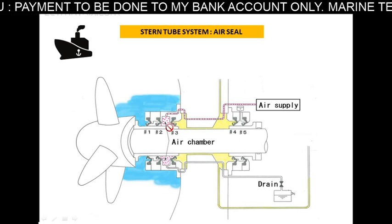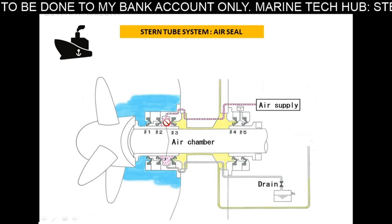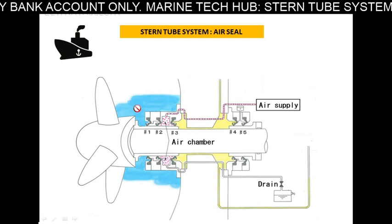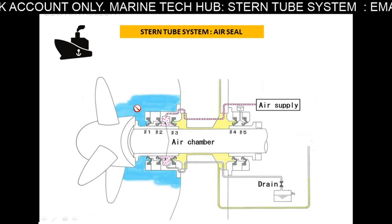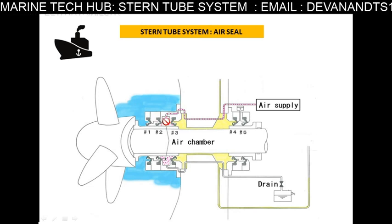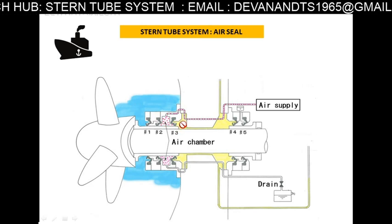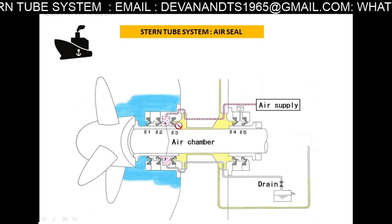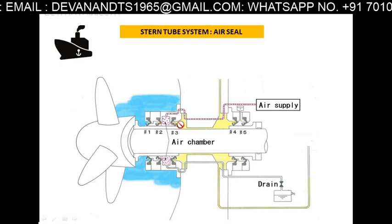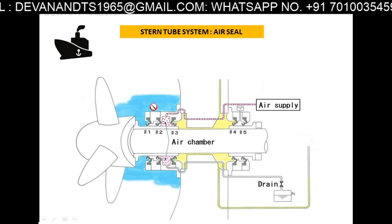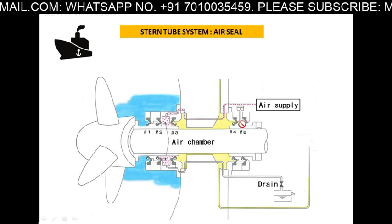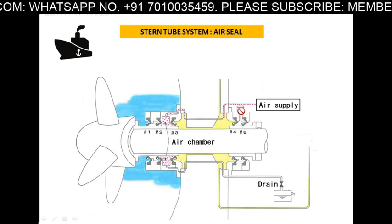To prevent sea water and oil from mixing, we apply air pressure in the chamber. If sea water pressure is 1 bar, the air pressure should be a little bit more, and the oil pressure should also be a little bit more, so that oil doesn't go out and water doesn't come in.